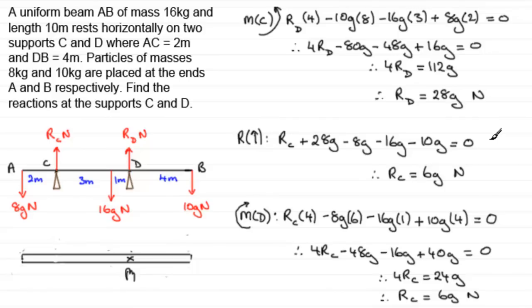That's generally the process we use when dealing with problems like this. I hope that's given you some idea of how we can handle examples similar to this — you can use this as a model. And I hope you like the idea of using a ruler, holding it at the point you're taking moments about — it's just a way that might help you to understand which way is positive and which is negative.